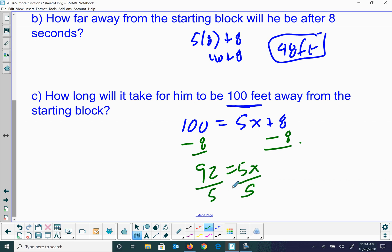In this case, I'd probably make it a decimal, so go ahead and divide it on your calculator: 92 divided by 5. It would take him 18.4 seconds once the race had started to be a hundred feet away from the starting block.